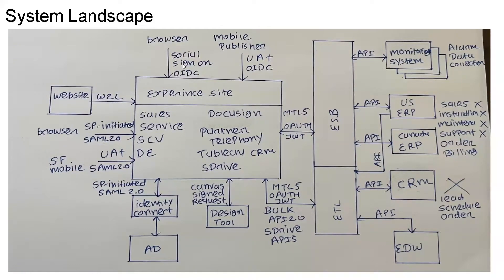I would be creating an Experience Cloud site for customers as well as contractors. Customers would log into the Experience Cloud site through social sign-on and would be using a wide receiver flow. They will also log through the Experience Cloud site from Mobile Publisher, at which time User Agent Plus wide receiver will come into picture. Since there are multiple systems, I recommend going with MuleSoft as the ESB, which will also be connected with Salesforce using OAuth flow. I would be enabling Mutual TLS on Salesforce as well as MuleSoft so both parties present certificates for a more secure integration.